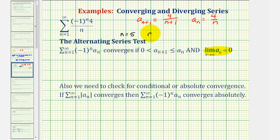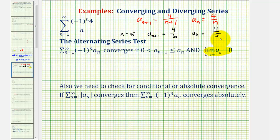If n is equal to five, a sub n plus one would be four over six, and a sub n would be four over five. Four over six is less than four over five, and therefore this pattern would continue for every value of n. So a sub n plus one is always less than or equal to a sub n. We've met both requirements for this test, and therefore the alternating series converges.